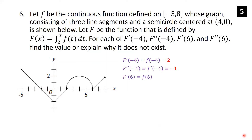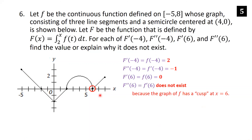F′(6) = f(6) = 0 because the point (6, 0) is on the curve. F″(6) = f′(6) does not exist because there is a cusp at x = 6 on the graph of f, making f non-differentiable at that point.